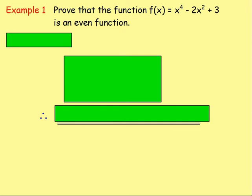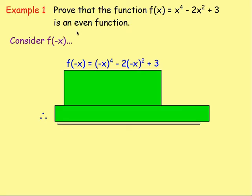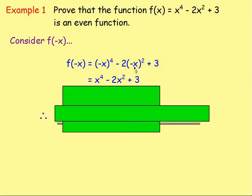Let's start with example one. Prove that the function f of x equals x to the power of 4, take away 2x squared plus 3 is an even function. You have to consider f of negative x. So replacing x with negative x on the right-hand side, we've got negative x to the power of 4, take away 2 times negative x all squared, plus 3. Negative x to the power of 4 works out to x to the power of 4. Negative x squared — the two negatives make a positive — so that's just x squared. Multiply by negative 2, and that's negative 2x squared. Plus 3 will stay as it is.